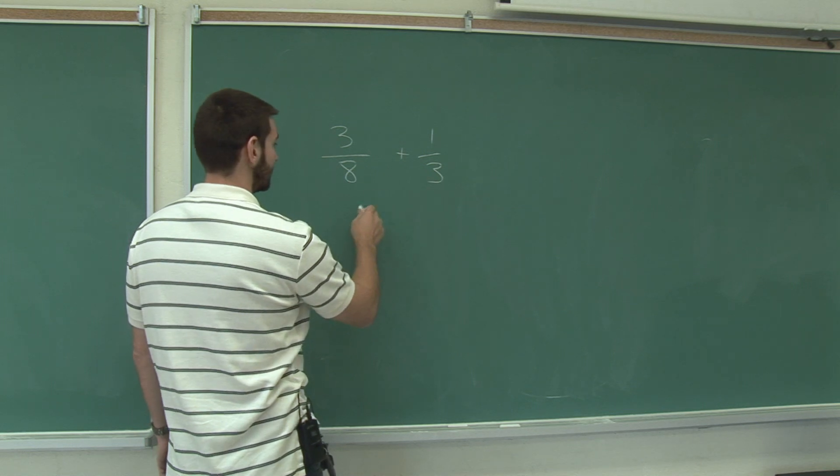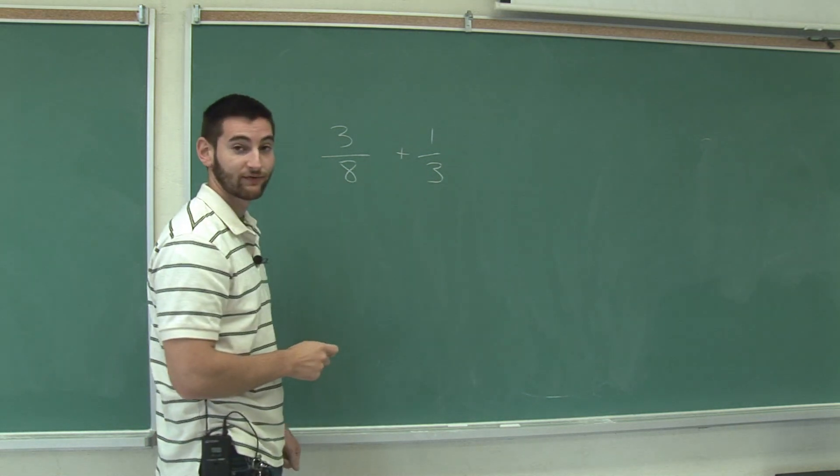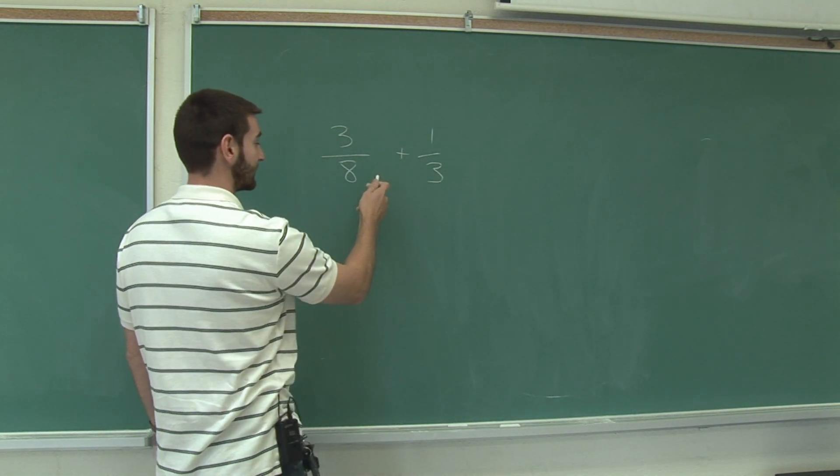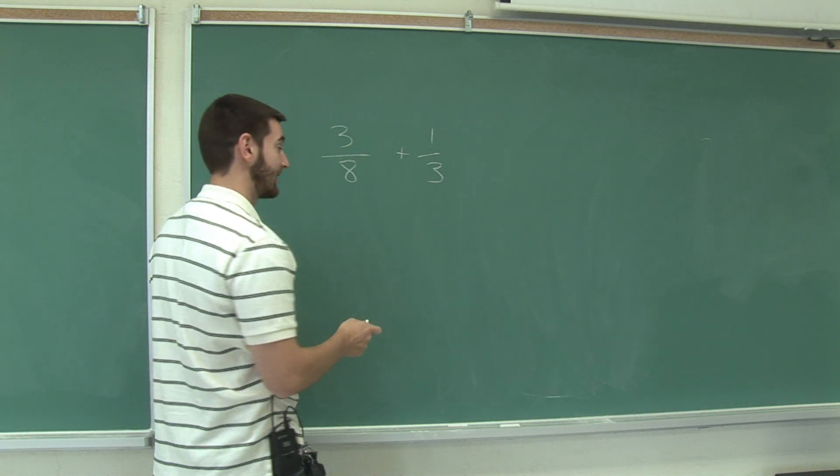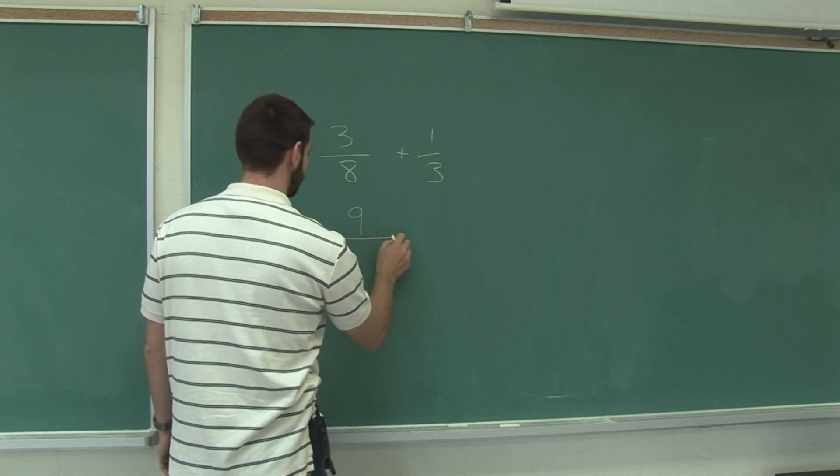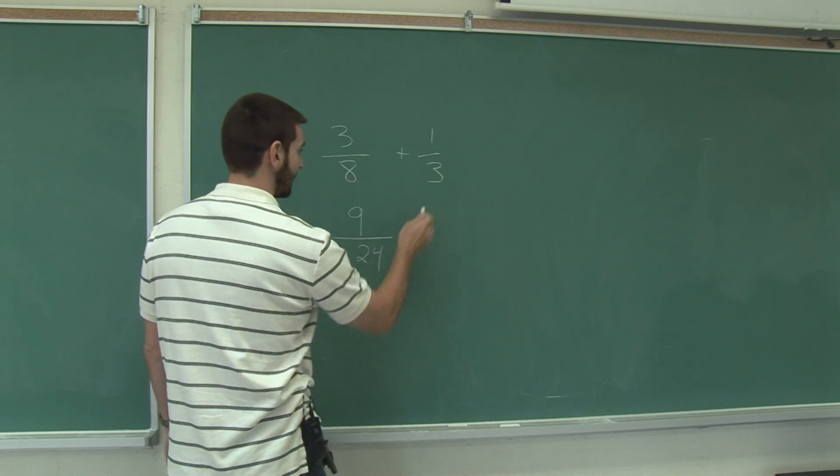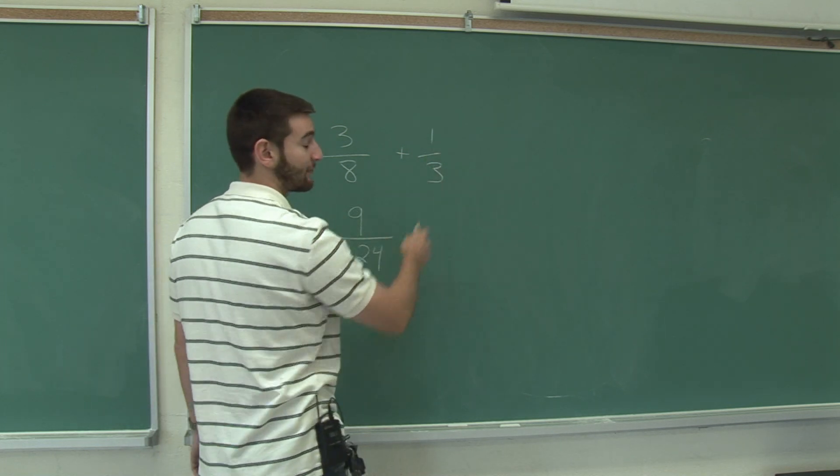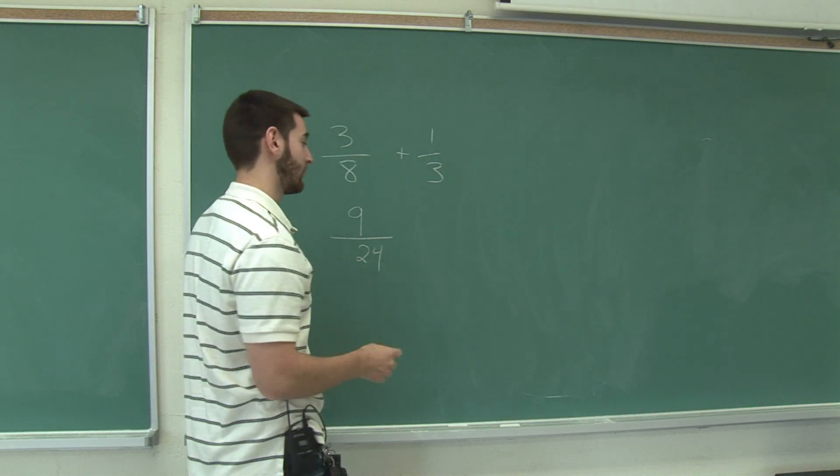So 3 eighths, the common denominator we're going to get is 24. So we're going to multiply this fraction by 3 over 3 which is the same as 1. And this one, to get 24, you multiply the top and bottom by 8 over 8 which is 1 as well.